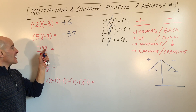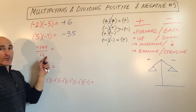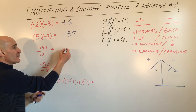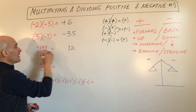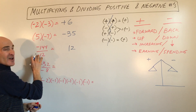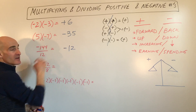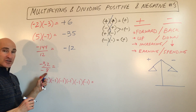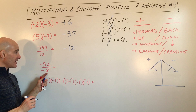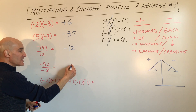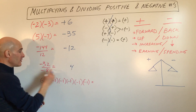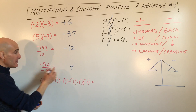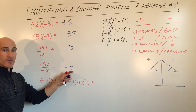Here we've got negative 144 divided by 12. 144 divided by 12 is 12, but a negative divided by a positive is a negative. This one here: negative 32 divided by negative 8. 32 divided by 8 is 4. A negative divided by another negative would be a positive, so this is positive 4.